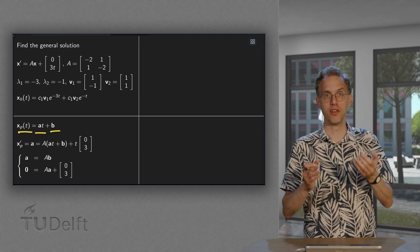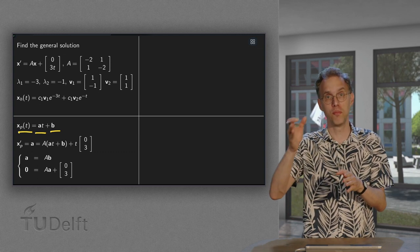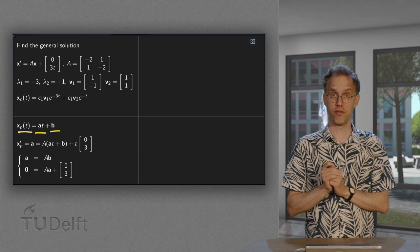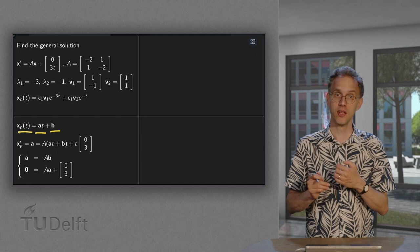So, our particular solution will be some unknown vector times t plus some other unknown vector. And we will call these unknown vectors a and b.